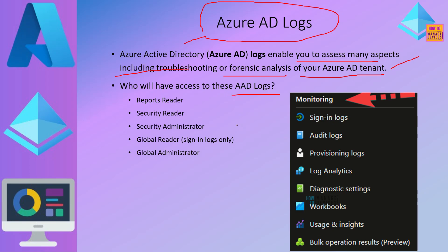What are the permissions required to check the Azure Active Directory logs? Reports reader, security reader, security administrator, global reader, global administrator. If you have any one of these roles, you would be able to check the Azure AD logs such as sign-in logs, audit logs, provisioning logs, etc.